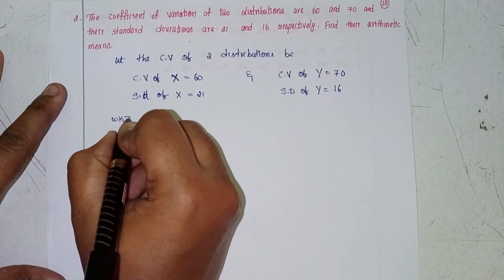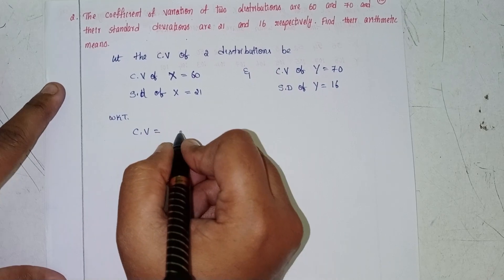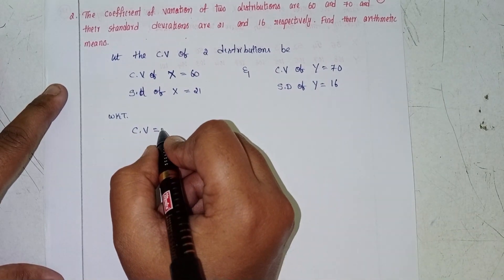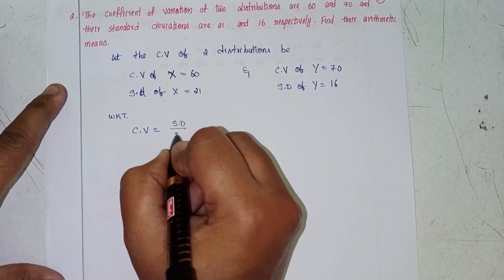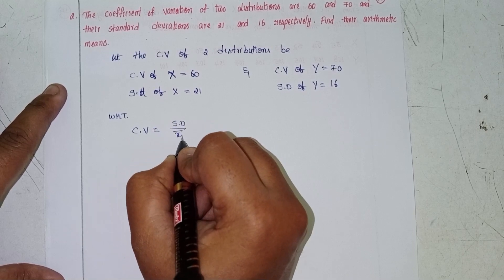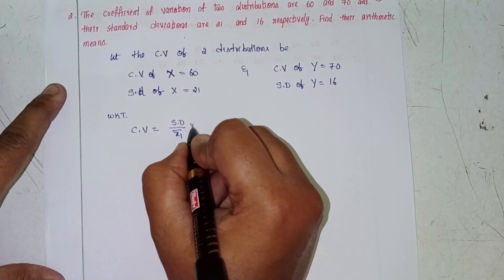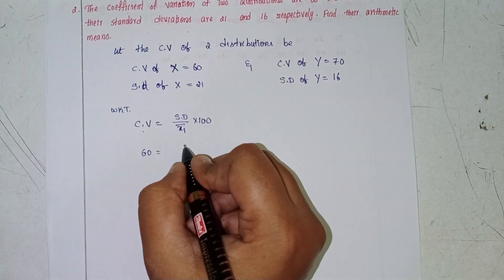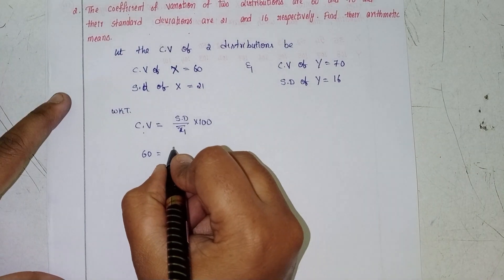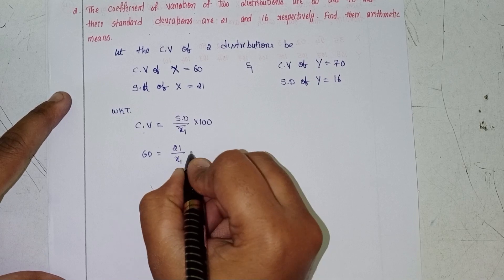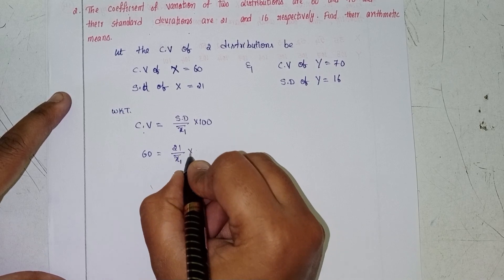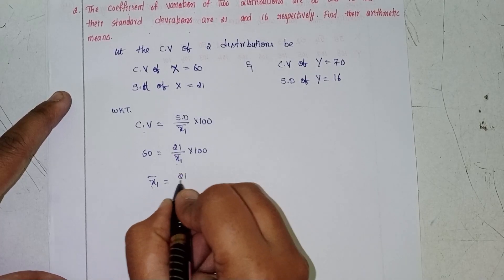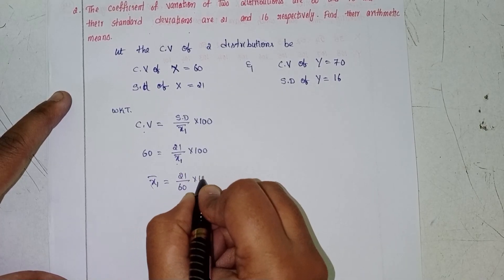The formula we know: coefficient of variation equals SD divided by x̄ into 100. So CV of x equals 60, which gives us x̄₁ equals 21 divided by 60 into 100.